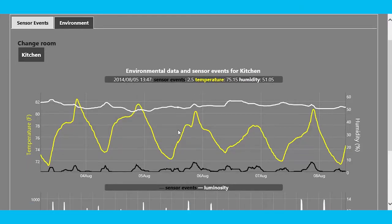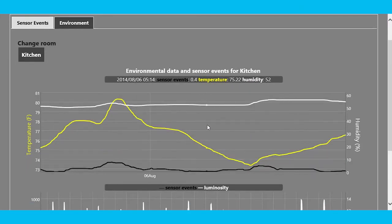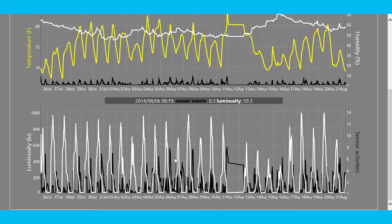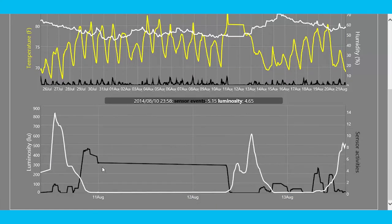Especially the relation between temperature and activities could be interesting for older adults. For example, if you would put a multi-sensor into a bedroom, because restless sleep and the room temperature are related. So if you see a lot of activities during the night and a high temperature of the room, you can adjust the temperature and try to get better sleep.